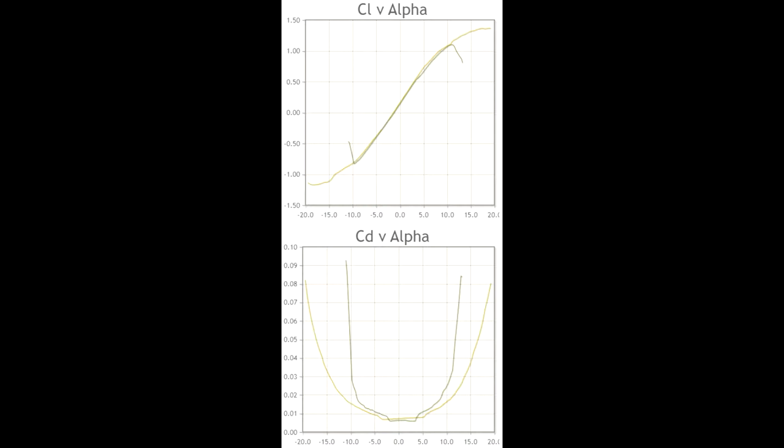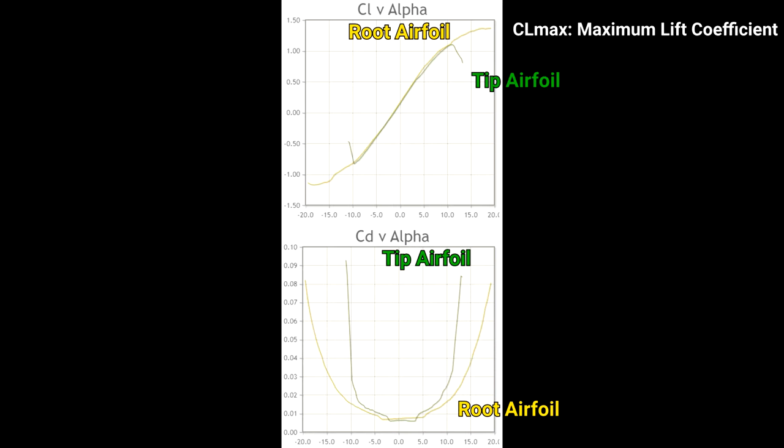Now let's look at the lift coefficient and drag coefficient as a function of angle of attack for both of these airfoils. The yellow curve is the root airfoil, and the green curve is the tip airfoil. The maximum lift coefficient is the maximum lift the wing can produce per unit of area, which is an important metric for an airfoil. All else being equal, an aircraft with a higher CL max will turn tighter, and that's certainly an advantage. As you can see, the thicker root airfoil has a significantly higher CL max of around 1.4, compared to 1.2 for the thinner tip airfoil. The thicker airfoil also stalls later. As a general rule, a thicker airfoil has a higher CL max than a thinner airfoil.